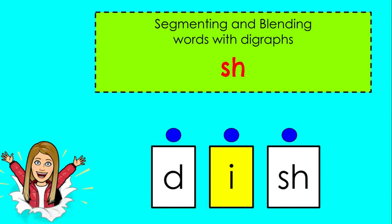Hi boys and girls. Today we're going to practice segmenting and blending words with digraphs. Remember, a digraph is two consonants together that make one new sound. Today's digraph is S-H and that makes the sh sound. We're going to say the sound of each letter and then blend those sounds together to make a word.